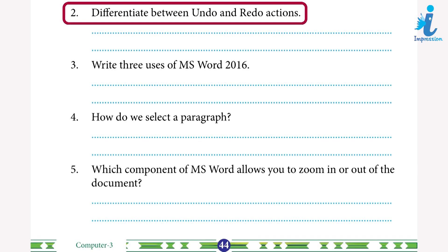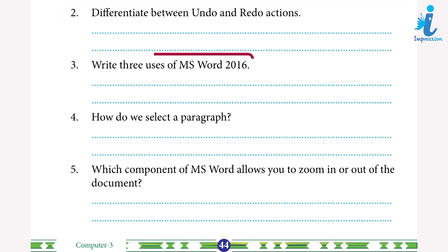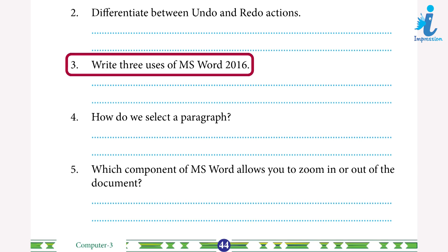Undo erases the last change done to the document, reverting it to an older state. Redo restores what we just did. Three, write three uses of MS Word 2016: one, it allows you to copy and move text from one location to another; two, it permits you to create letters, resumes, and notices in an orderly manner; three, it lets you edit the text after typing.